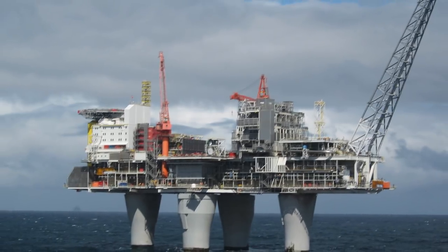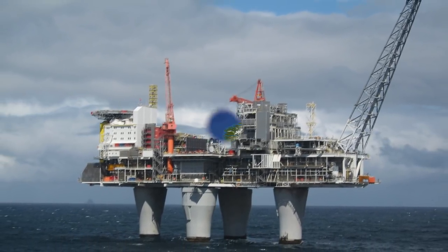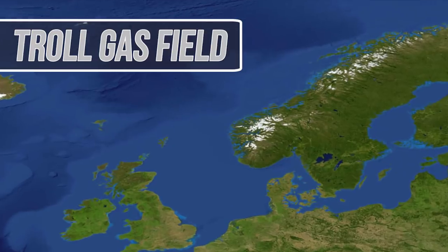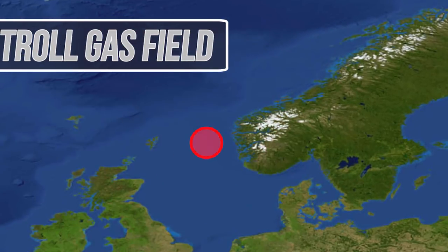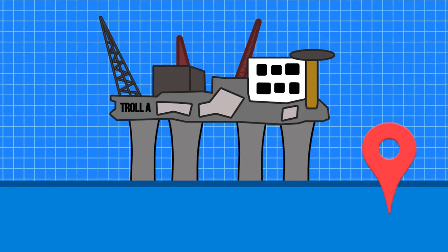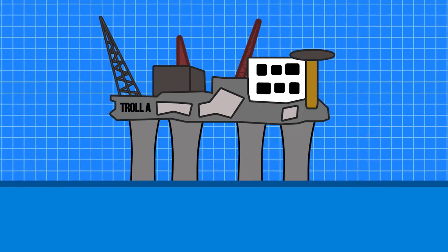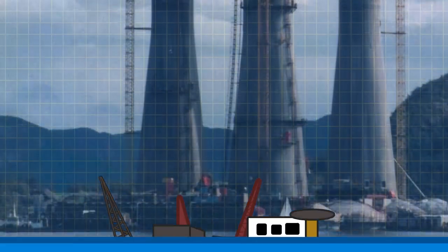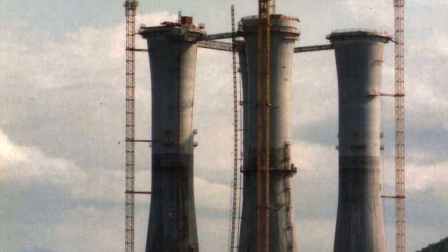This natural gas platform sits on the Troll gas field located 174 miles off the western coast of Norway. Rather than construct this massive structure in place in the middle of the ocean, engineers decided it would be much easier to build it on land and then move it into the proper location.